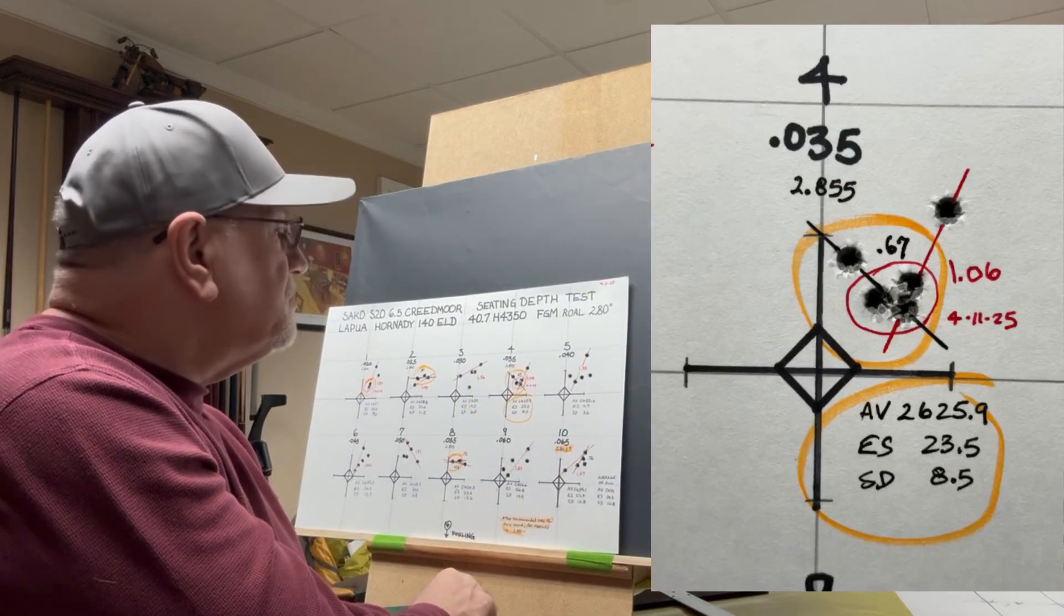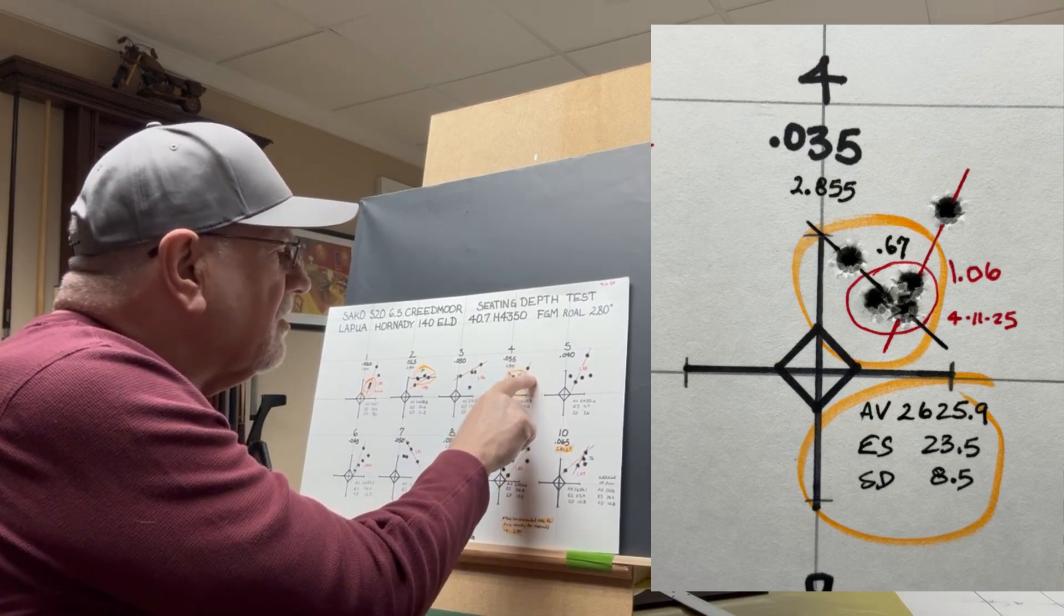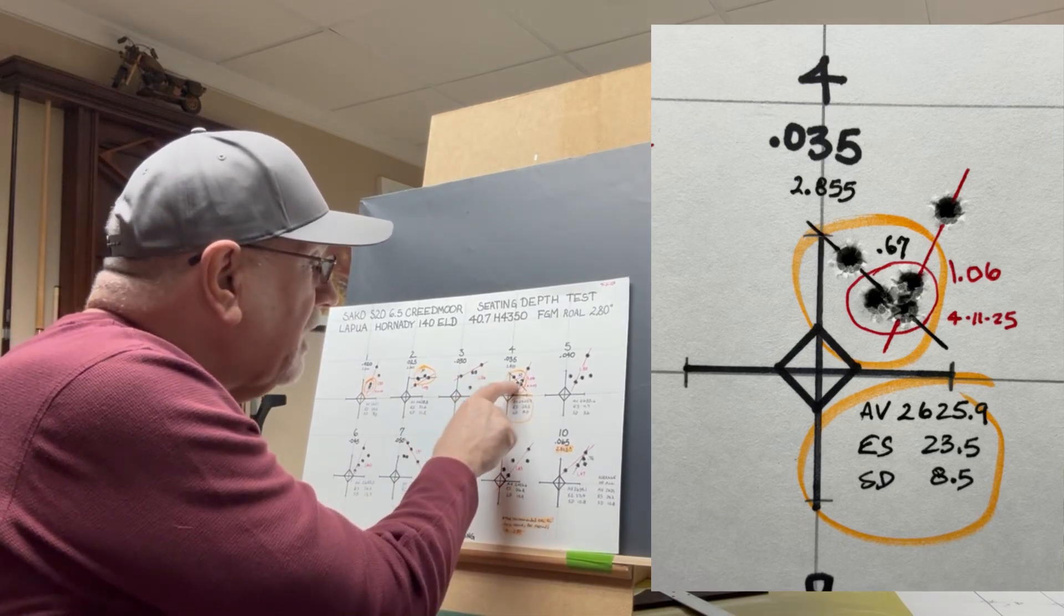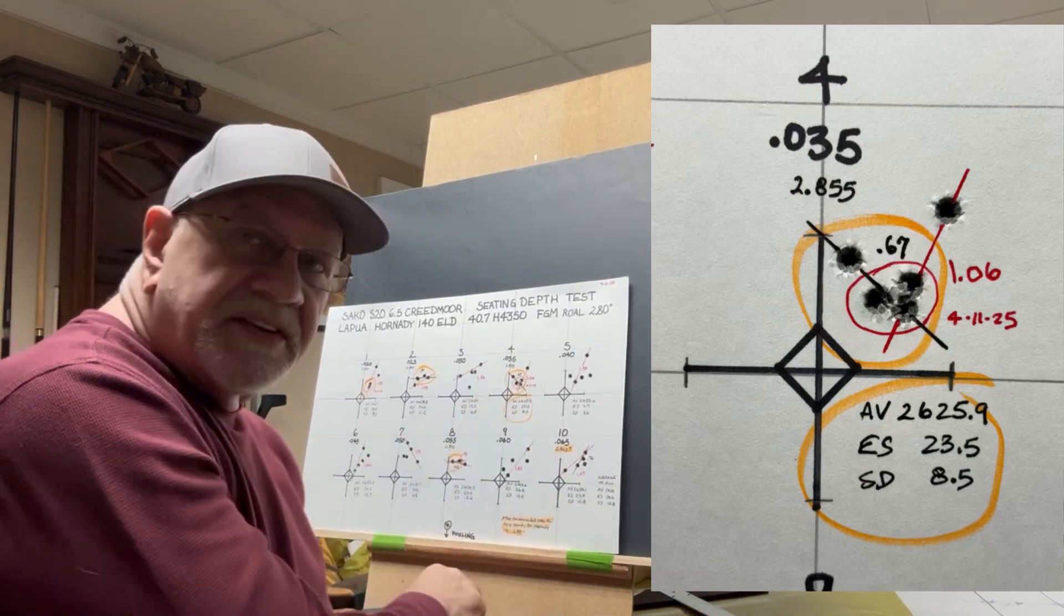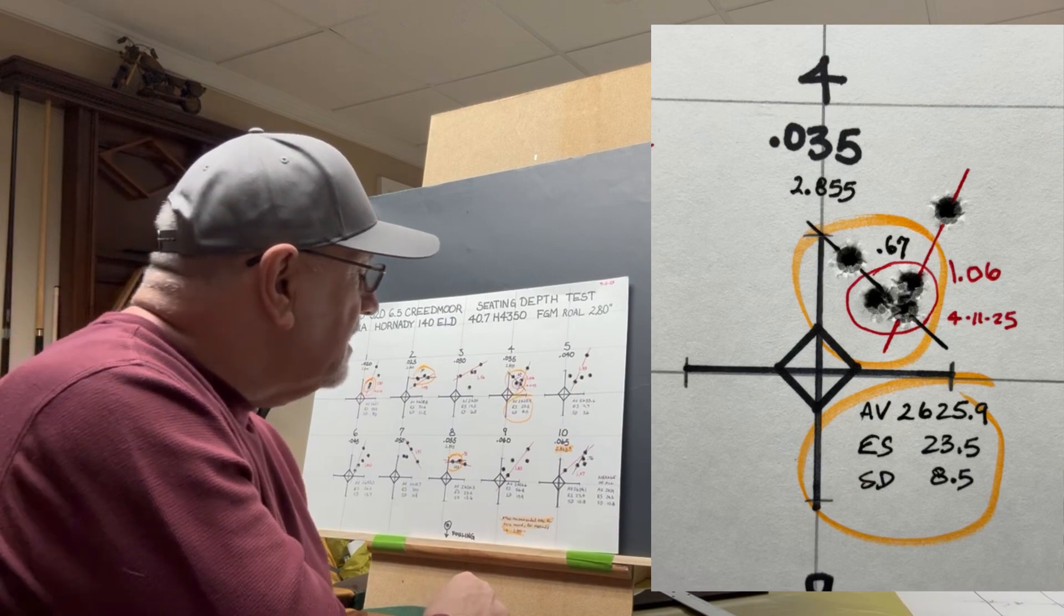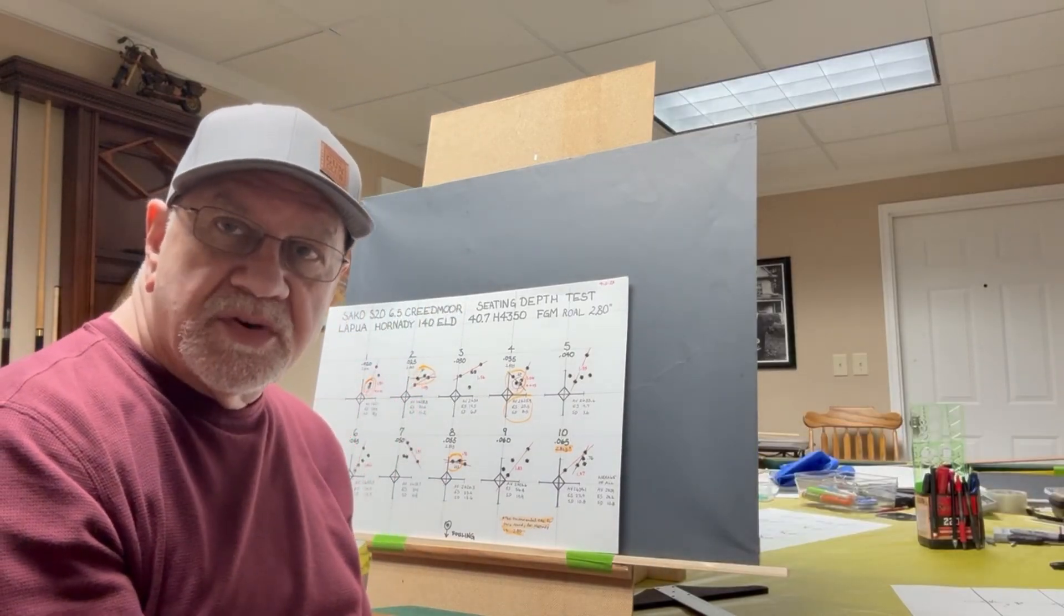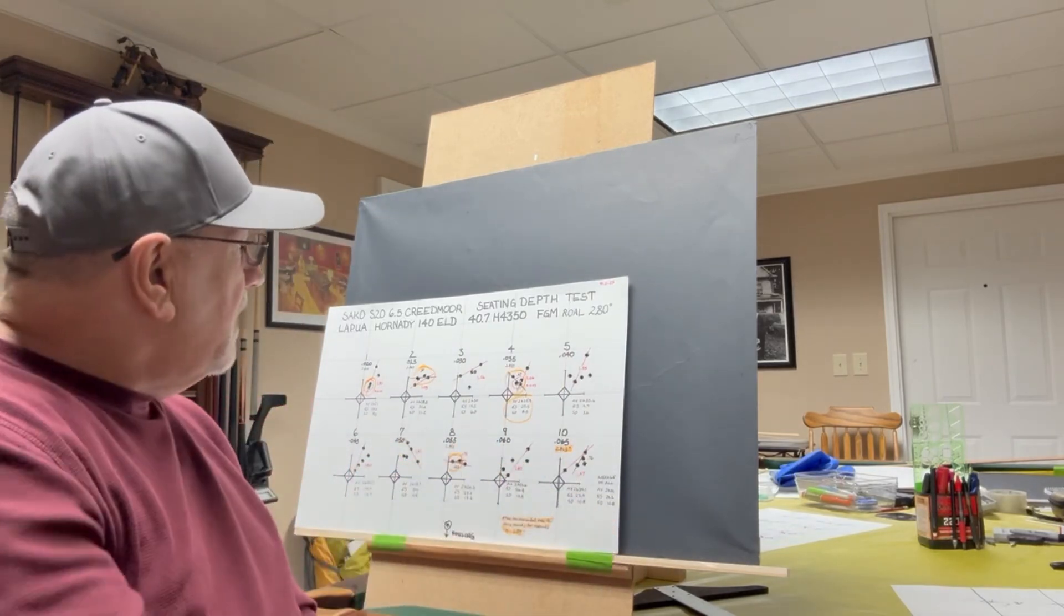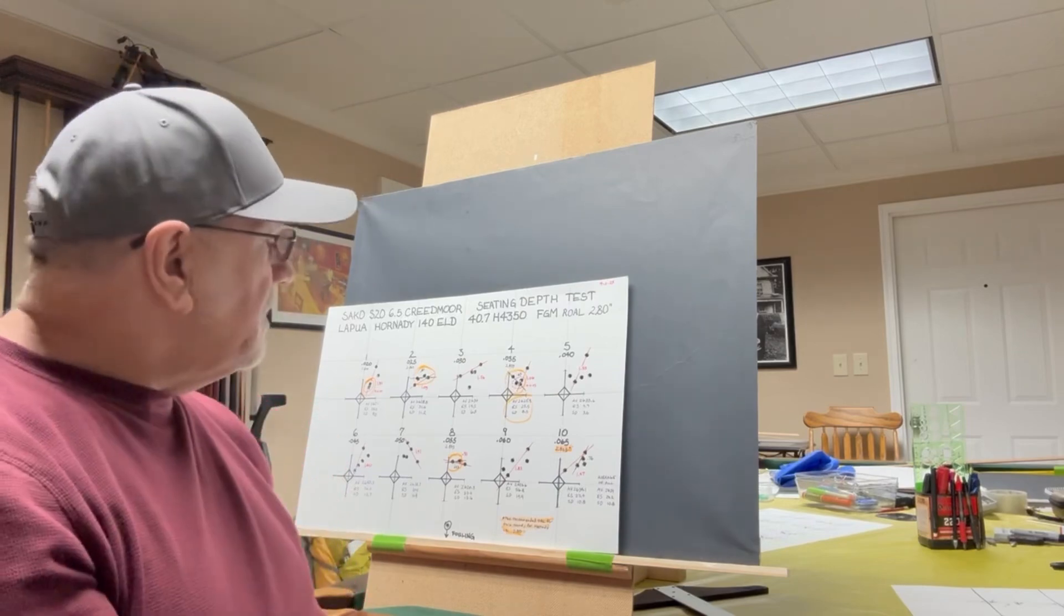At 35 thousandths off the rifling, this one looks pretty promising because we had a group size of 1.06, but we've got one flyer out here, and if you look at the best four out of five, we've got a 0.67 group size there as represented by the black line. You've got three that are clustered together right here really tight, and the thing is you've got a standard deviation in single digits at 8.5, and an average velocity of 2625.9, so that might be one. If seating depth doesn't tune the load, perhaps powder charge will. We're at 40.7, so we might come back a tenth of grain or two tenths either side of that and go to maybe 40.5, 40.6, 40.7, 40.8, 40.9, and see if we can get that to tighten up a little bit.